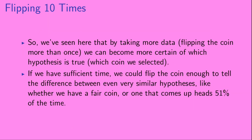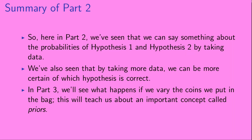So we've seen here that by taking more data — flipping the coin more than once — we can become more certain of which hypothesis is true, which coin we selected. In fact, if we had sufficient time, we could flip the coin enough to tell the difference between even very similar hypotheses, like whether we have a fair coin or one that comes up heads 51% of the time. In part three, we'll see what happens if we vary the coins we put in the bag. This will teach us about an important concept called priors.